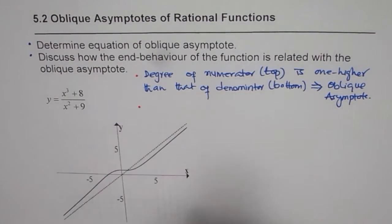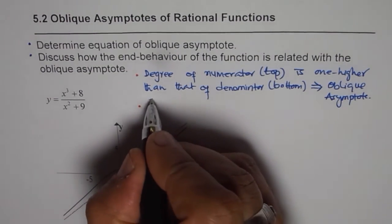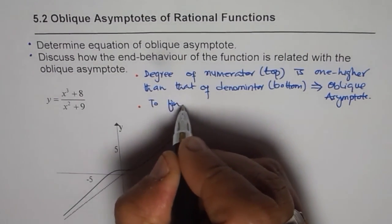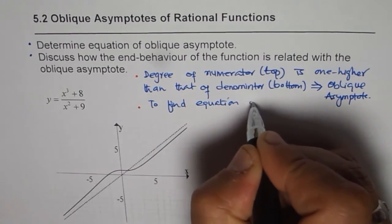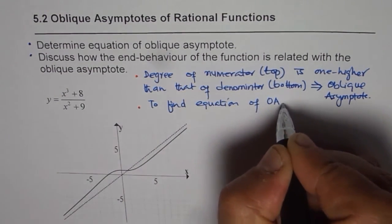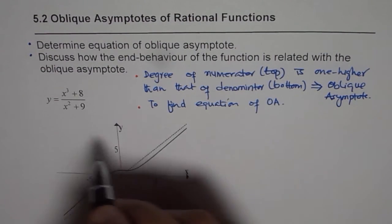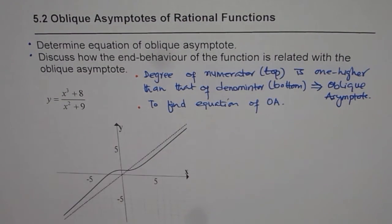The technique to find the equation of oblique asymptote is divide. So, let us divide the numerator by denominator.